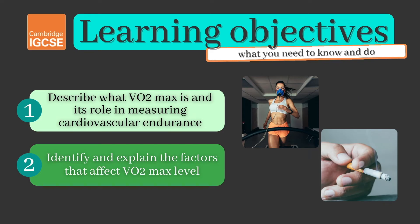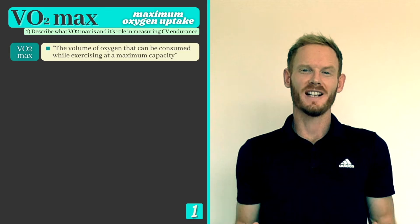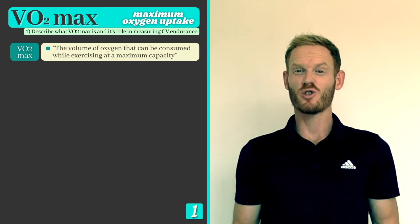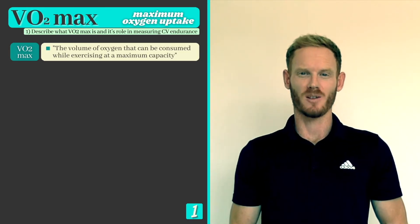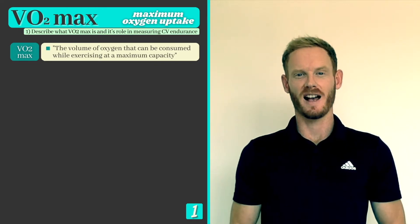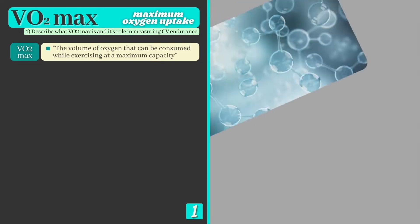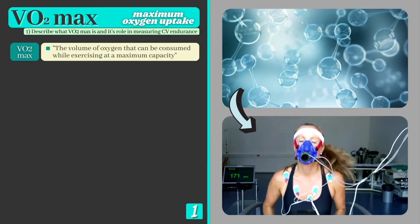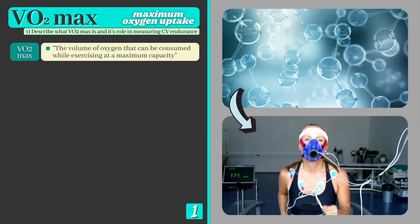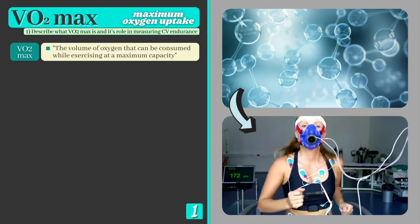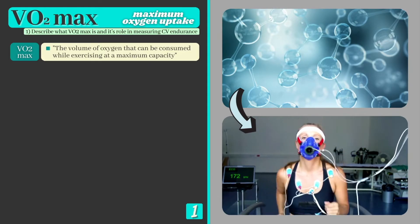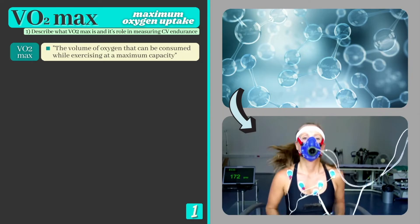You also need to identify and explain the factors that affect VO2 max level. It is now widely recognised that our ability to take up and transport oxygen to the working muscles is one of the most important factors for athletic performance. VO2 max, our key term for the lesson, is defined as the volume of oxygen that can be consumed while exercising at maximum capacity, and is measured in millilitres of oxygen consumed per kilogram of body weight per minute.